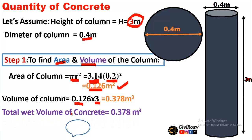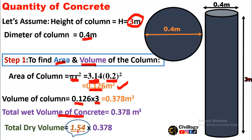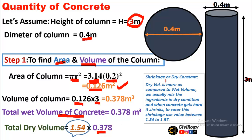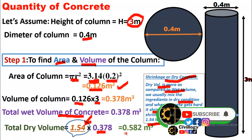It is very important to note that this is the wet volume of the concrete — the volume of concrete after mixing. Before mixing, when we mix the concrete, the ingredients are in dry form. So the dry volume will be equal to 1.54 times 0.378. Dry volume is more compared to wet volume, and 1.54 is the dry or shrinkage constant. When concrete hardens it shrinks, so to cater for this shrinkage we use a value between 1.54 to 1.57. Here we use 1.54, giving a dry volume of 0.528 cubic meters.